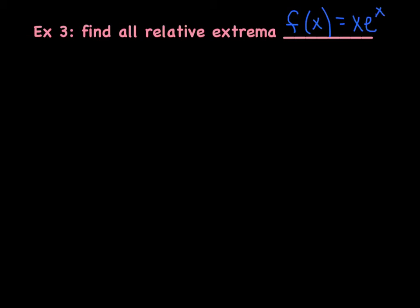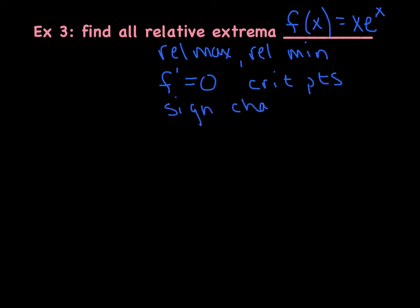All right, our next, our third example is an applied problem, and they want us to find all relative extrema. Now relative extrema is kind of an umbrella that includes both relative maxes and relative mins. So we want to find both. And what we're going to do, and sometimes I like to kind of visualize where I'm going with the problem before I dive in. What I'm going to do is I'm going to find the first derivative. I'm going to set that first derivative equal to 0 so that I can find all of its critical points. I'm then going to construct a sign chart. And whenever the first derivative changes from negative to positive, I've identified a relative min. And if that first derivative changes from positive to negative, I've identified a relative max. So that's kind of where I'm going with this problem.